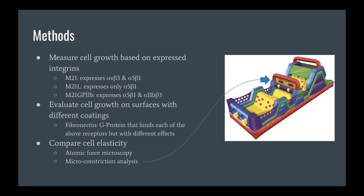In another experiment they also used micro-constriction analysis. Basically, they sent cells through a constricted area and measured how fast they go through and how much they were deformed, and they were able to use that to also measure cell elasticity.